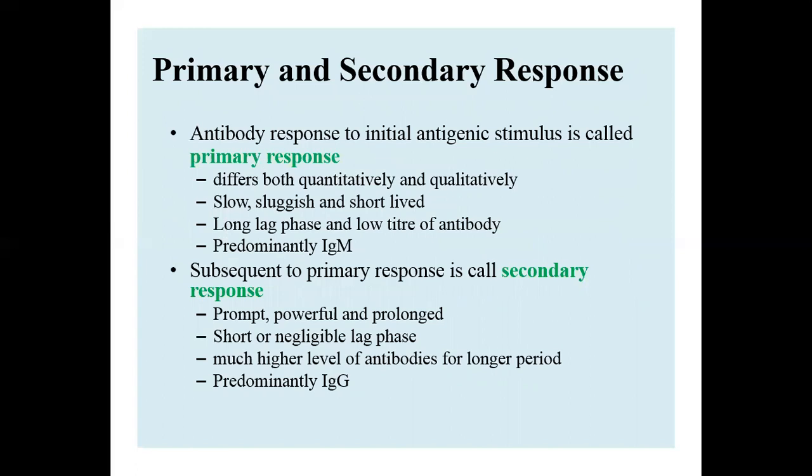Antibody responses can be classified into two classes: primary and secondary response. The primary response is the initial antibody response to antigenic stimulus. It differs both quantitatively and qualitatively from the secondary response. It is slow, sluggish, and short-lived, with a long lag phase, and is predominantly characterized by the production of IgM.